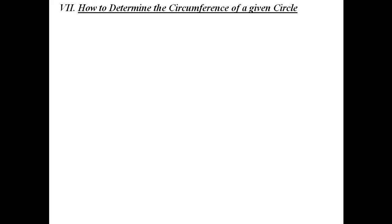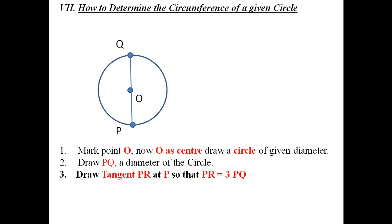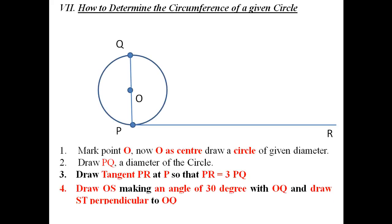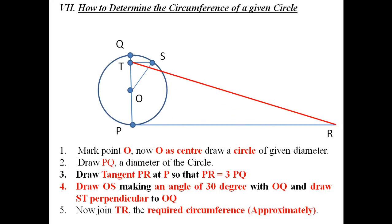The next problem is how to determine the circumference of a given circle. Draw a circle with center O and mark a diameter line PQ. Draw a tangent at P such that it is three times the length of PQ. Draw line OS making an angle of 30 degrees with OQ. Then draw a perpendicular from S to OQ, marking the foot as T. Join T to R — that is the required approximate circumference of the circle.